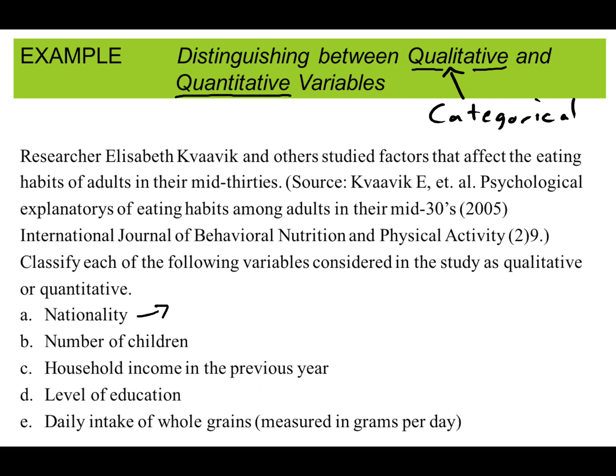So nationality, that is a qualitative variable. Number of children, that is a quantitative variable. You could have an average number of children, that makes sense. Household income in the previous year, that is a number and that is quantitative.